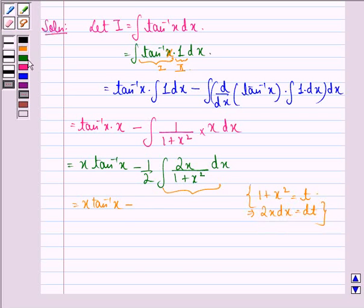So we have minus 1 by 2 integral, 2x dx is dt divided by t. This will be equal to x tan inverse x minus 1 by 2.